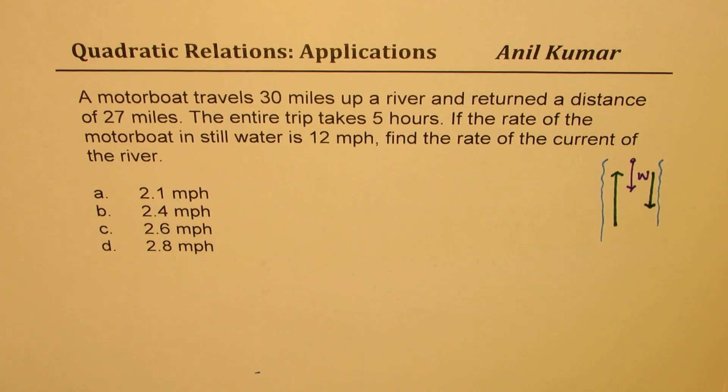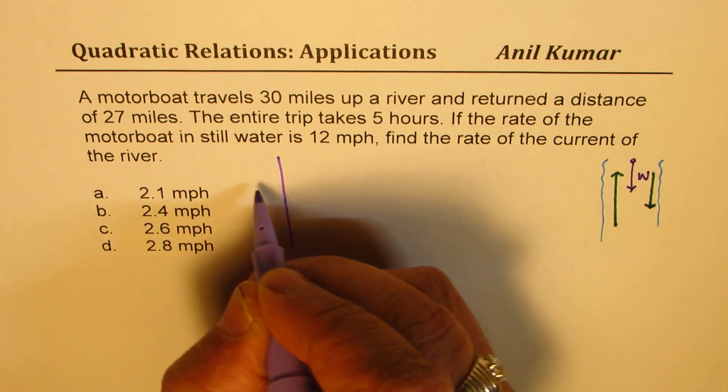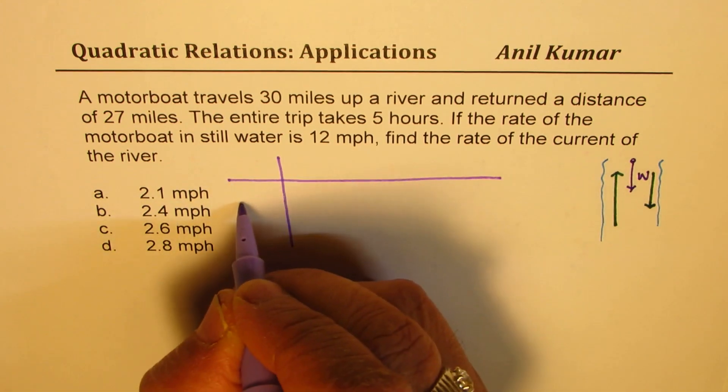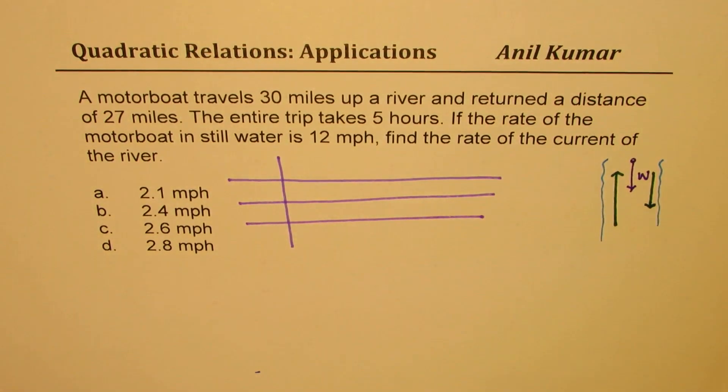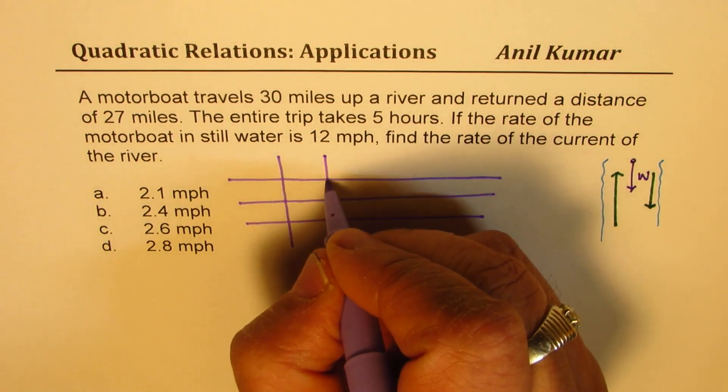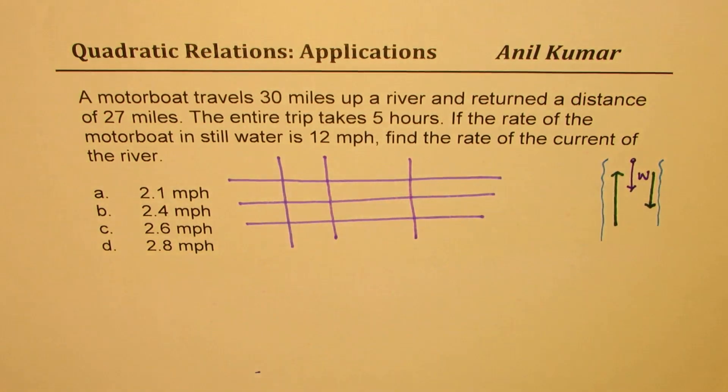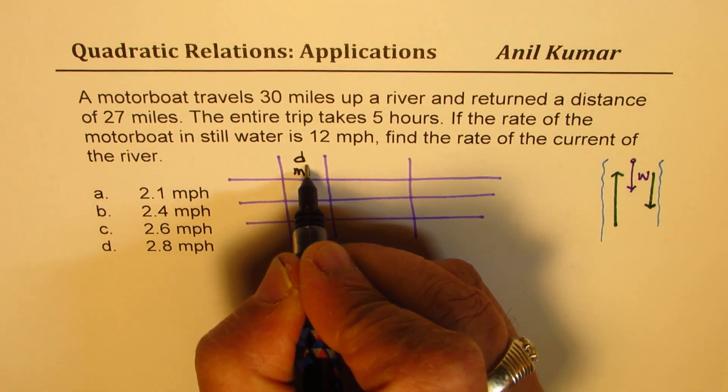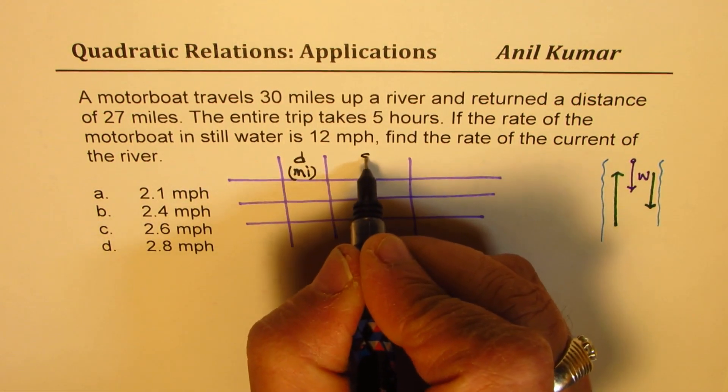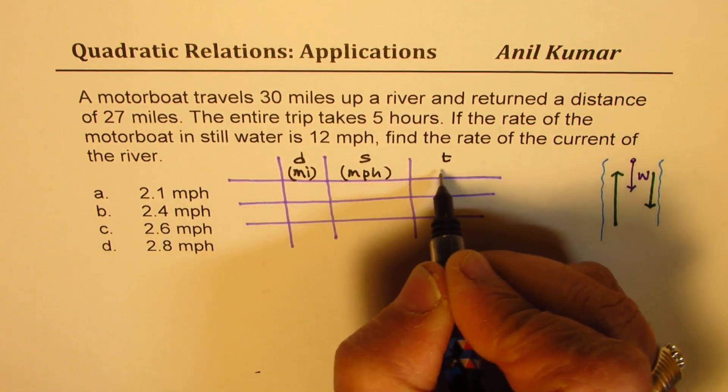We can actually represent all this situation in the form of a table. So let me sketch a table here and that is how we are going to actually solve all the questions relating distance, speed and time. So we'll form three columns relating distance, speed and time. So here we will talk about distance in miles, speed in miles per hour and time in hours.